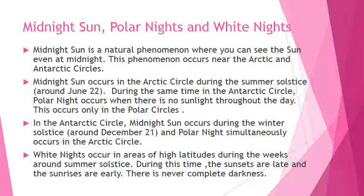During the same time, in the Antarctic circle, polar nights occur when there is no sunlight throughout the day. This occurs only in the polar circles. In the Antarctic circle, midnight Sun occurs during the winter solstice, and polar nights simultaneously occur in the Arctic circle.